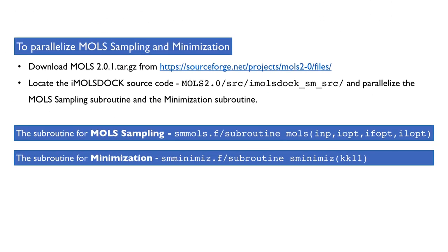To parallelize the MLS sampling and minimization in IMALS DOG, we first need to download the source code from the website shown here. The subroutines responsible for MLS sampling and minimization in IMALS DOG are the subroutine MOLS and the subroutine S_minimis.